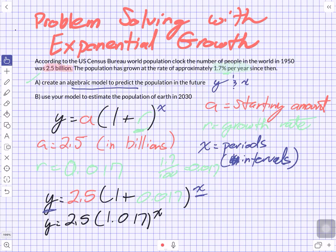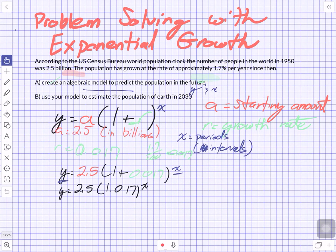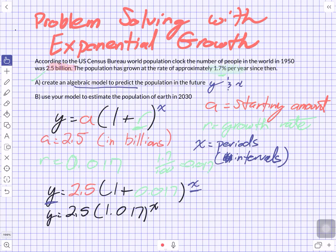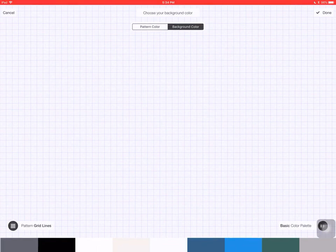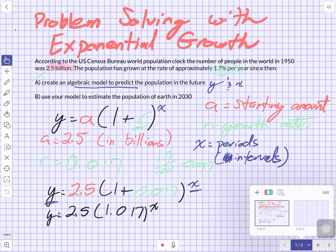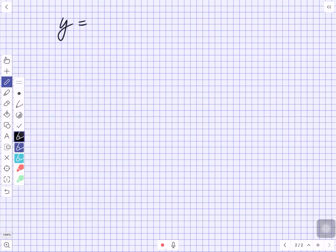So we can simplify our model. Y is equal to 2.5 times 1.017 to the power of x. That's our simplified algebraic model. We need to use your model to estimate the population of Earth in 2030. We'll do that, and then we'll find today's population and see if it ends up being correct. So here's our model again. Y equals 2.5 times 1.017 to the power of x.